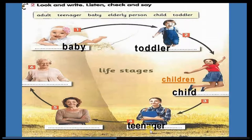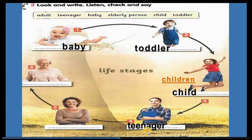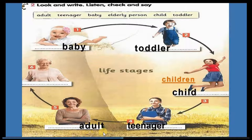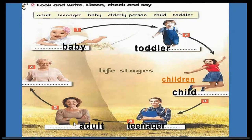Number four: teenager — a person between 13 and 19 years old, like students in preparatory or secondary school. Number five: adult — persons who are fully grown, like your father, mother, uncle, aunt, and so on.